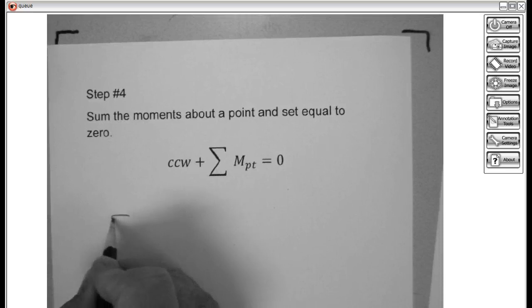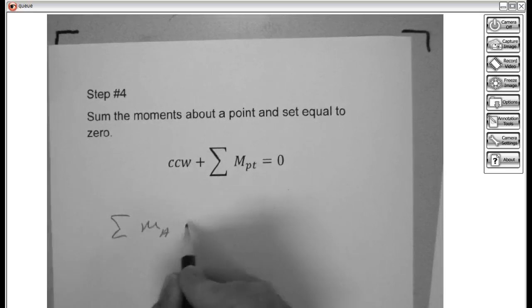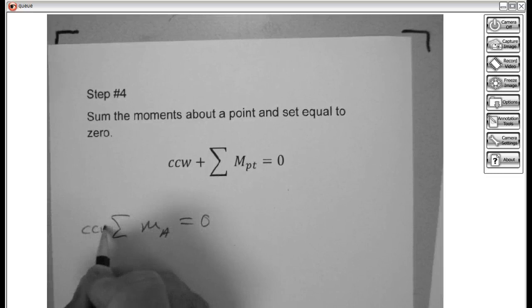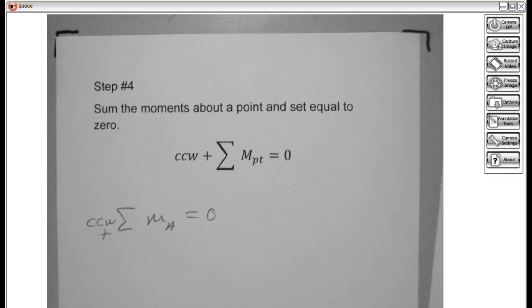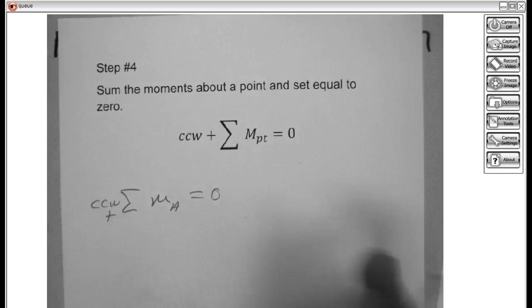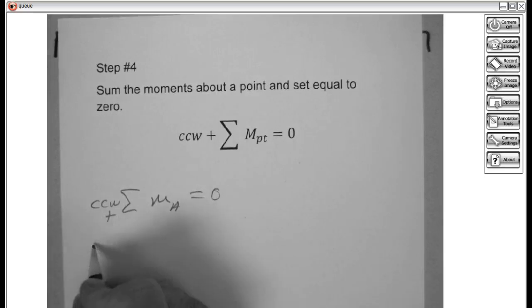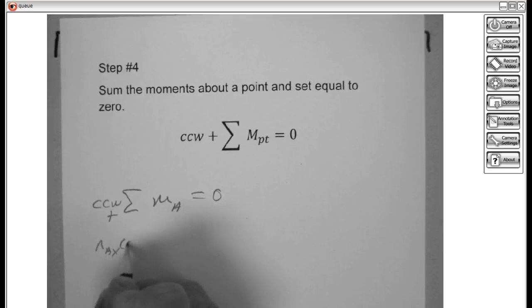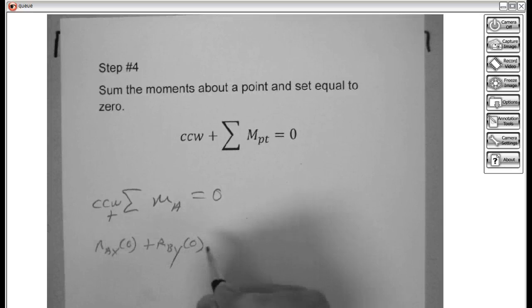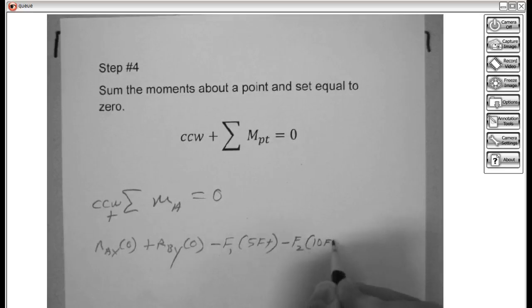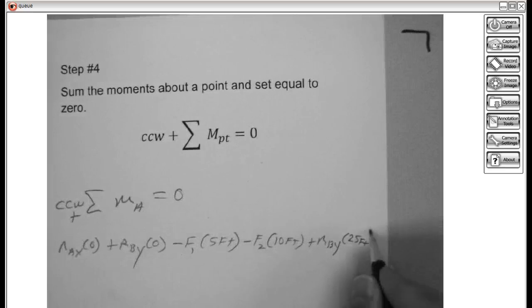A clockwise force is going to be negative just like your pre-cal teacher would state. We've got the sum of the moments about point A equals 0. I do want to state that counterclockwise is positive. That's not always an absolute. I said we're going to have 5 terms. We have RAX, 0 distance, plus RAY, which is a 0 distance, minus F1 times 5 feet, minus F2 times 10 feet, plus RBY times 25 feet, and that is all going to equal 0.